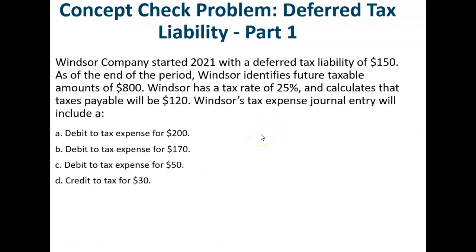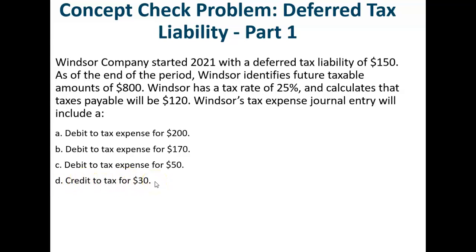Let's do another deferred tax problem involving depreciation. Windsor Company started 2021 with a deferred tax liability of $150. At the end of the year, Windsor identifies future taxable amounts of $800. Windsor has a tax rate of 25% and calculates taxes payable will be $120. Windsor's tax expense journal entry will include: A) a debit to tax expense for $200; B) a debit to tax expense for $170; C) a debit to tax expense for $50; or D) a credit to tax expense for $30. Please pause the video, calculate your answer, and start the video again to check your work.